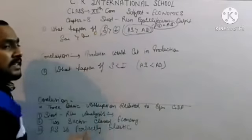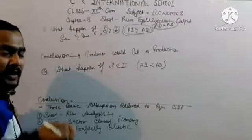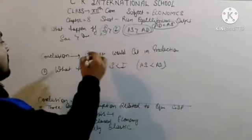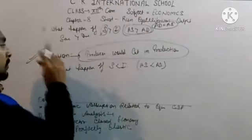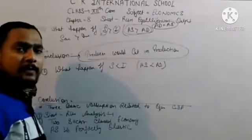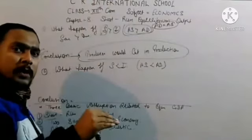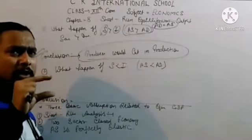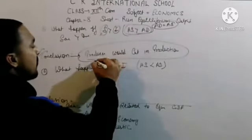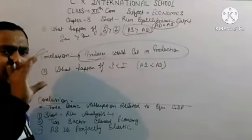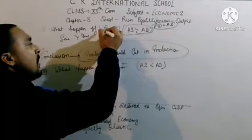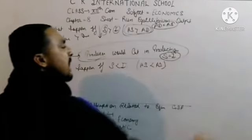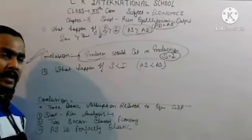When people save more, demand decreases. The producer has already produced more (invested more), but demand is low, so undesired stock accumulates - the producer suffers a loss. To recover from this loss, next time the producer will cut production. As production is cut, income generation falls. Lower income means lower saving, so saving starts to decrease until S equals I and equilibrium is restored.